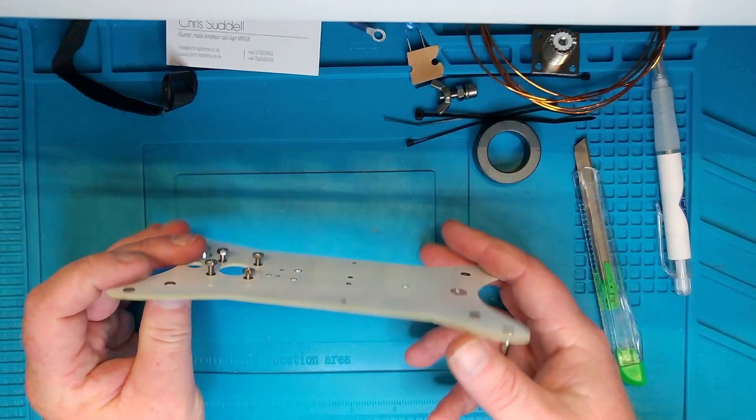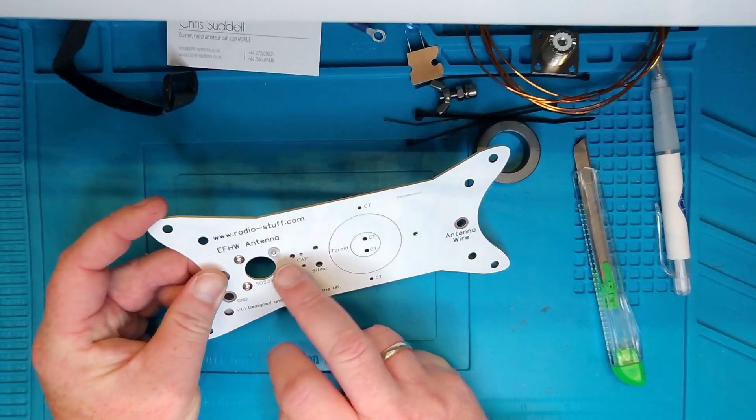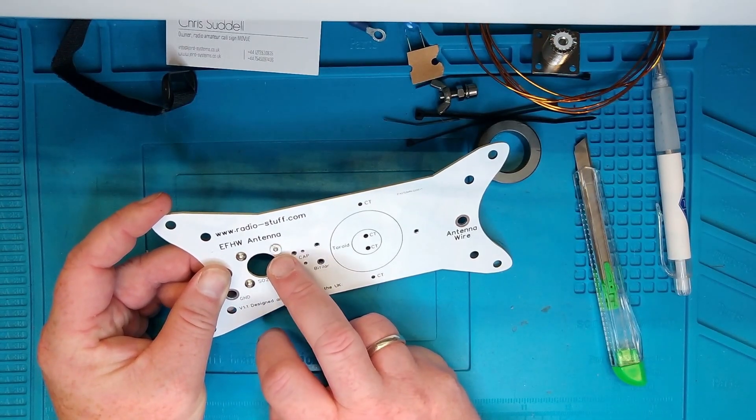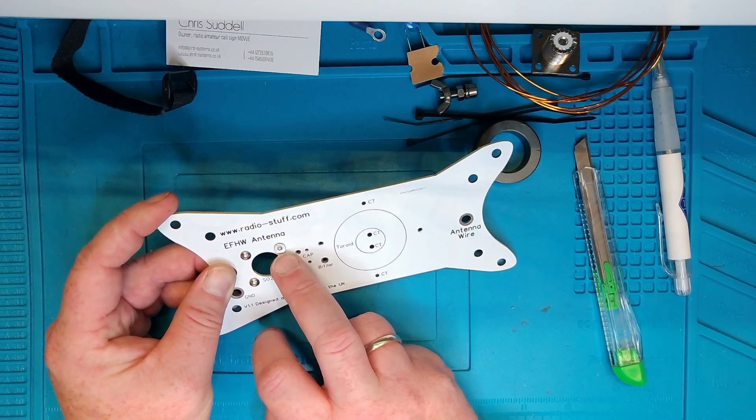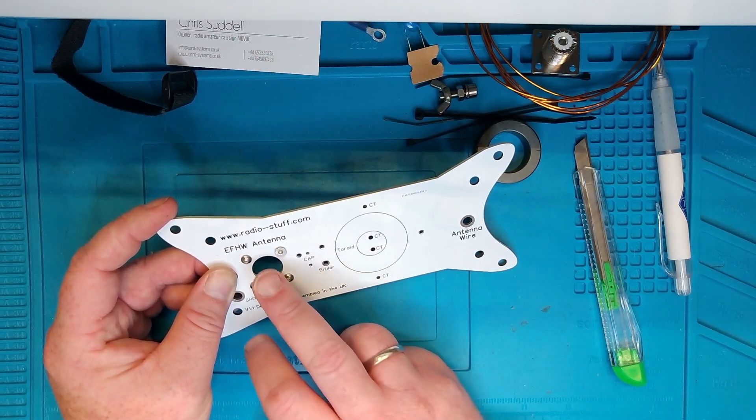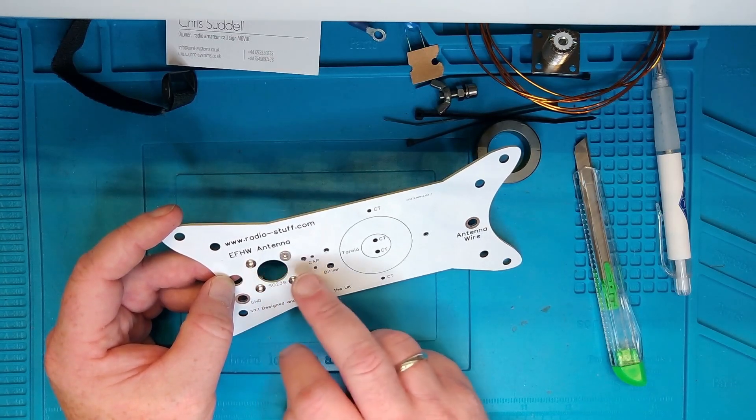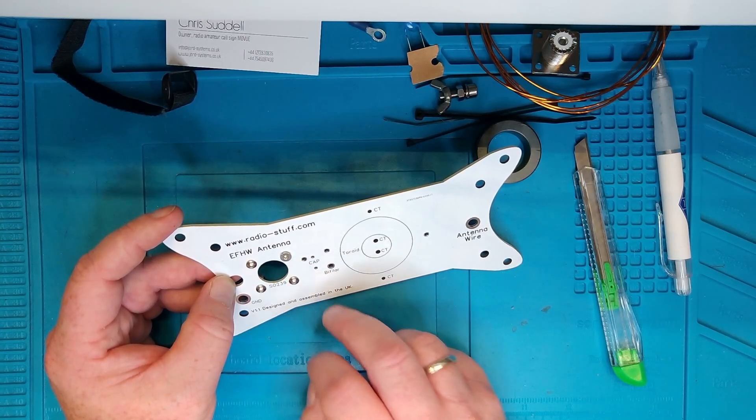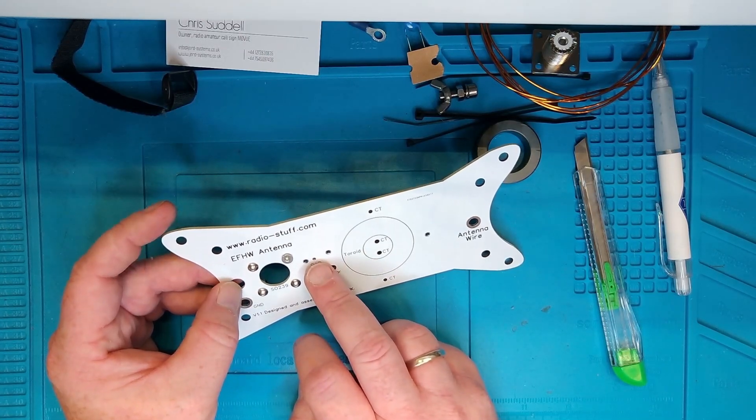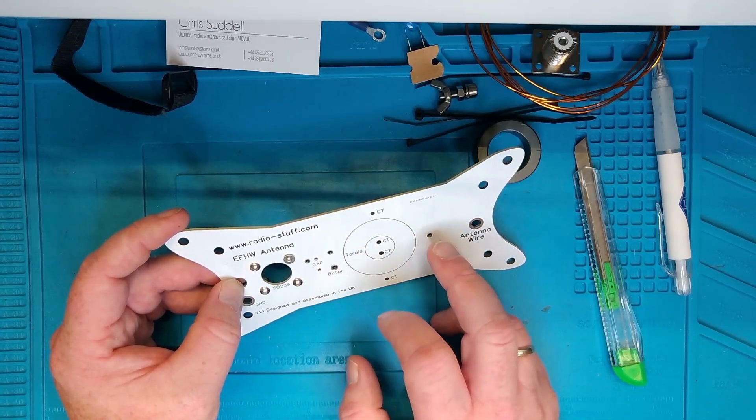But what you got here is the reason why this antenna enticed me. The entire winder is made out of PCB, and if you notice on the four screws here, one is different because I managed to lose one. So you have the SO239 connector here, and from there it's just a short jumper wire over to this solder point.